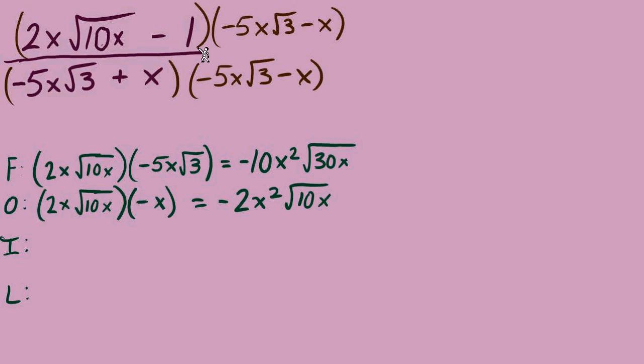How about inner terms, -1 times -5x√3. There it is, -1 times -5x√3. Outside, -1 times -5x positive 5x, there's the √3. Save the easy one for last, I guess. That's -1 times -x equals x.